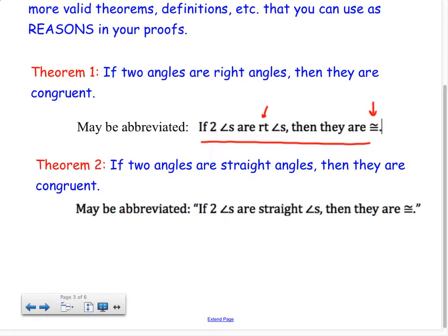The second theorem is if two angles are straight angles, then they are congruent. Again, there's an abbreviation that I'll accept. And again, that makes sense. Straight angles are both 180, therefore they have the same measure, and that in itself is the definition of congruence. So these are two theorems we can use in our proofs. Do not write theorem one or theorem two as the reason in your proof. Actually write out the statement, if two angles are right angles, then they are congruent.